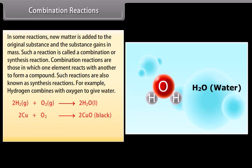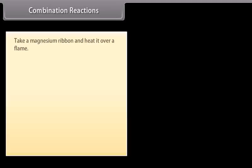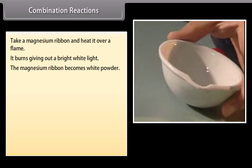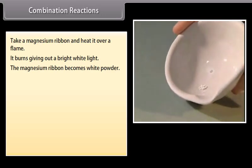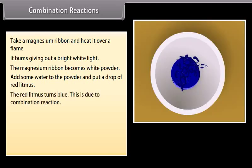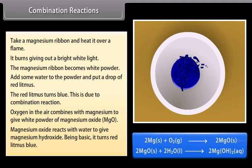More combination examples: 2Cu + O2 → 2CuO; 4Fe + 3O2 → 2Fe2O3 (rust). Activity: Take a magnesium ribbon and heat it over a flame — it burns giving a bright white light, and becomes white powder. Add water to the powder and put a drop of red litmus — it turns blue. This is due to a combination reaction: oxygen combines with magnesium to give magnesium oxide, which reacts with water to give magnesium hydroxide. Being basic, it turns red litmus blue.